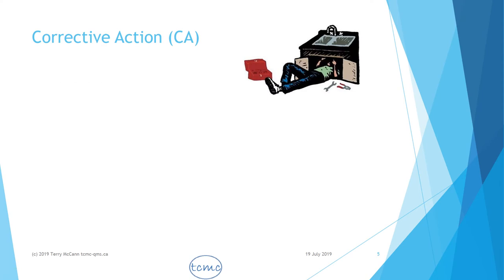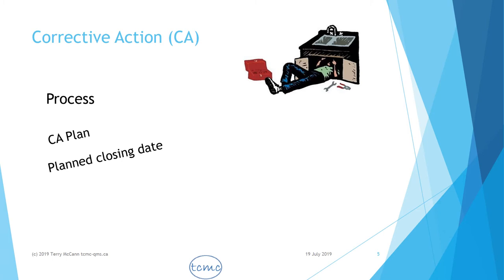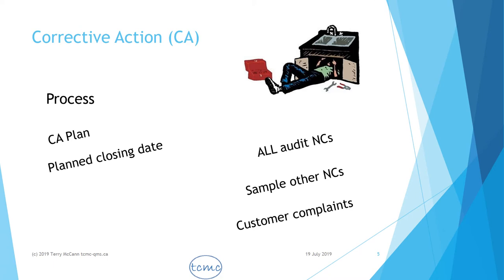An important item to be audited in each audit is to follow up on corrective actions for non-conformities, or NCs, found in the previous audit. Your QMS should have one or more processes defined for the handling of corrective actions, including having a corrective action plan and a planned closing date. Is your organization following that process? All NCs from previous audits — especially third-party audits — are the most important corrective actions to follow up on. But a sample of other NCs should be reviewed as well, especially those originating from customer complaints.